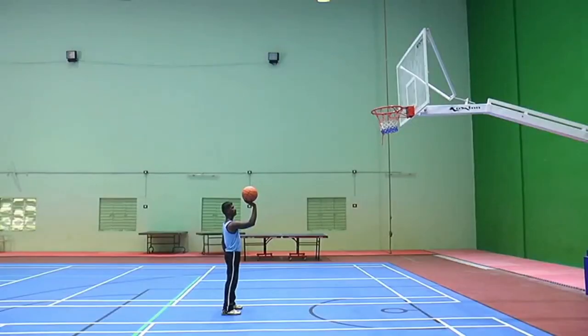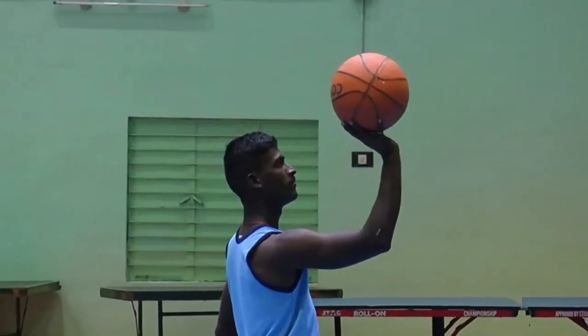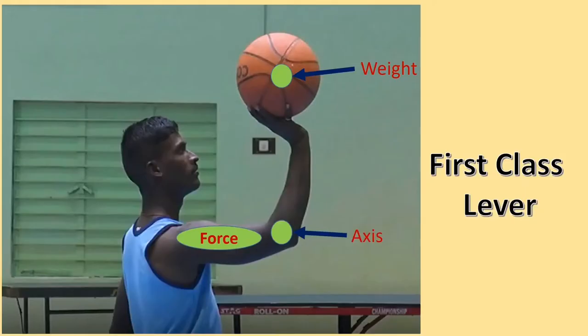Second example is basketball shooting. And thus, the ball becomes the weight and elbow joint becomes the axis and biceps plus the tight muscle becomes the force. Which one is at the middle? Yes, axis. Then it belongs to the first class lever.